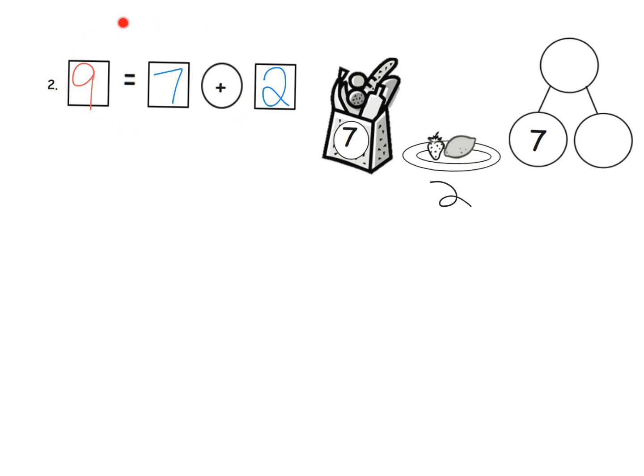Our number bond over here, now that we see the number sentence, it's pretty easy. Our number bond is going to say our missing value is two and our total is nine.